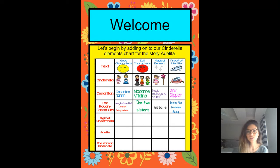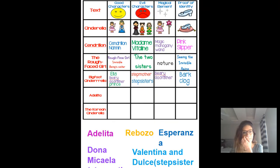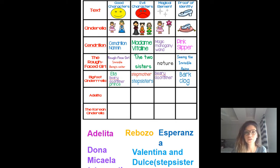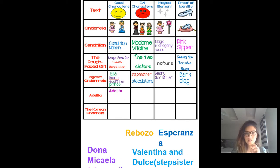Let's begin by adding on to our Cinderella elements chart for the story Adelita. We've been doing this chart for every other story — we have Cinderella, Cendrillion, the Rough-Faced Girl, Bigfoot Cinderella, and now we're adding Adelita. So let me ask you, boys and girls, who are the good characters in Adelita? Adelita — and there's one more. We'll add it in a little bit.